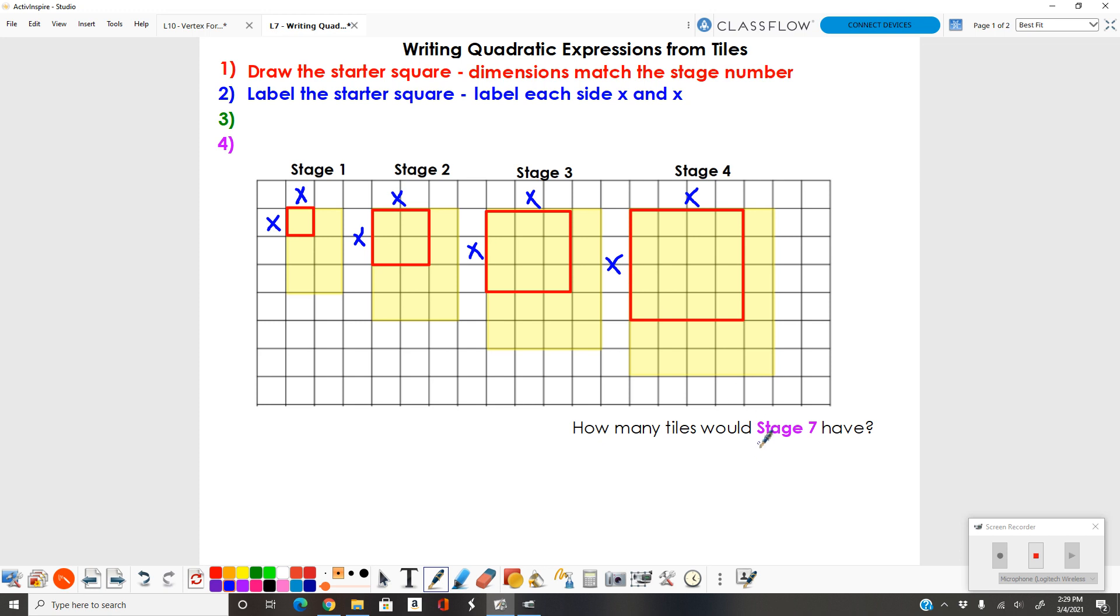The reason we do that is because eventually we're going to have to find any possible stage. We need these x's to represent any possible stage. Once you have your starter square labeled, your next step is going to be to find your extras. What I mean by extras is you're looking for all the extra rows and columns that you have. This method will only work if you have complete rows and columns. What I notice is I have my starter square plus one more complete column right here. That pattern is going to be consistent no matter which stage I look at. I have x plus one more column.